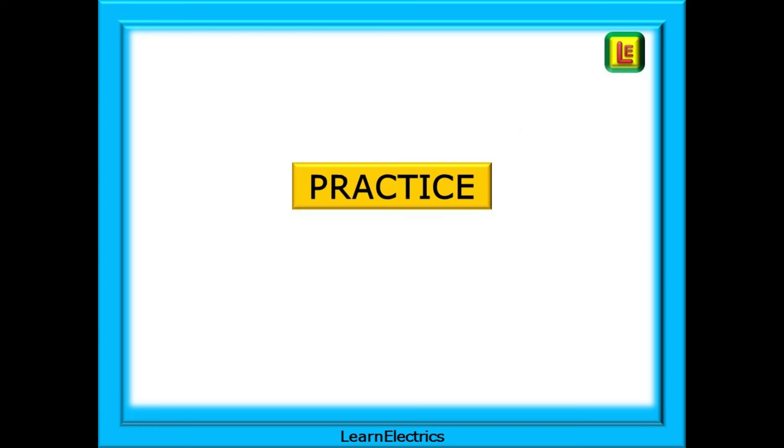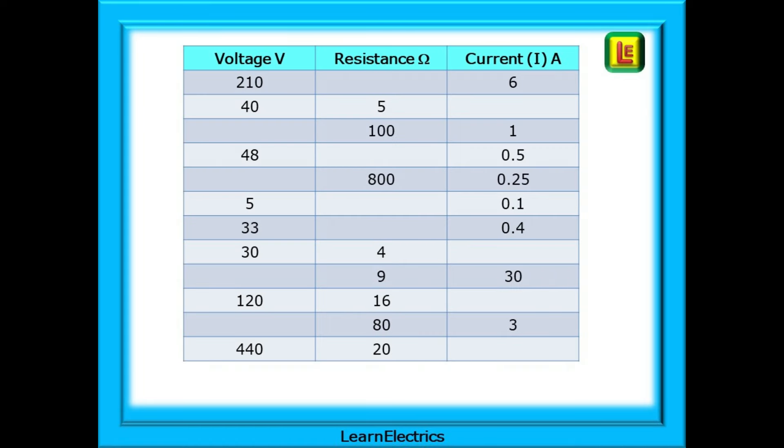Over to you now and 12 easy calculations for you to make. Pause the video and attempt an answer for each of the 12 practice calculations shown on the next slide. The table shows 12 examples of Ohm's law. Calculate the missing value in each case. Here's the same table with the answers shown in red. Hopefully you found all the correct values. If not, don't worry. Just repeat the exercise again, watch the video again and practice until you understand.